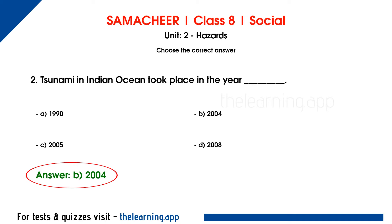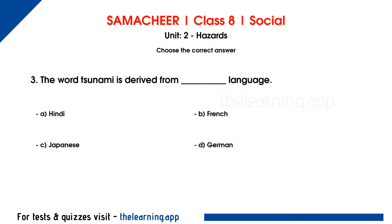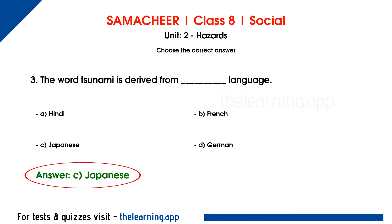There was a tsunami in Nareya. The options are Japanese, D, German. The correct answer is option C, Japanese. The word 'tsunami' in Nareya originates from the Japanese language.